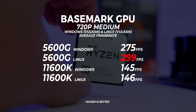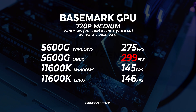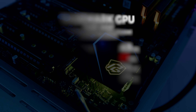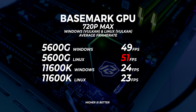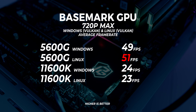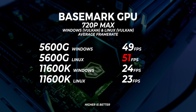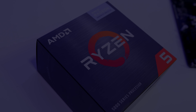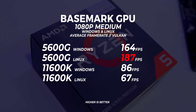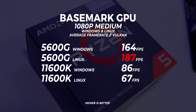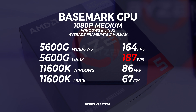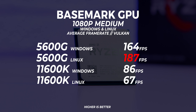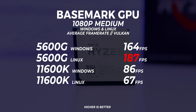Moving on to Basemark GPU — at 720p medium we're seeing that the 5600G in Linux with Vulkan is performing the best out of the lot. At 720p max, Linux performance with the 5600G is also the best of the batch — not something you would typically see with Basemark at all. It's usually Windows performance outpacing Linux. And at 1080p medium, Linux performance is once again outpacing Windows. There is something quite interesting going on here, and I'm not quite sure why this benchmark is performing better on Linux.